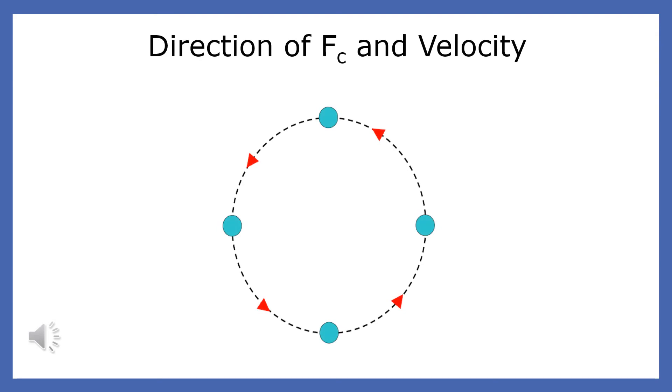An object moves counterclockwise. Let's look at the direction of the centripetal force and velocity of the object at four positions. The centripetal force at each of these positions is directed towards the center of the circle. The velocity of the object at each position is tangent to the circle in the counterclockwise direction.